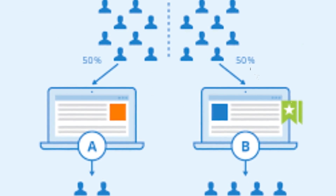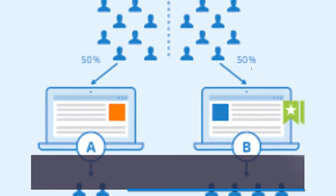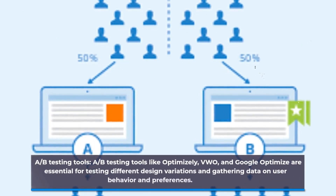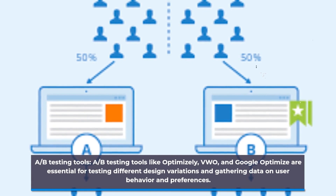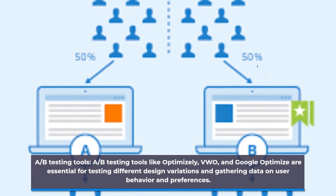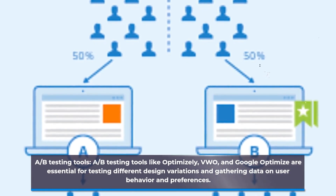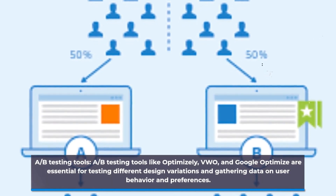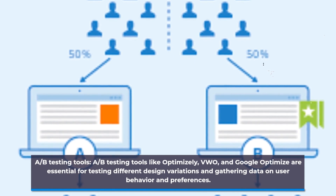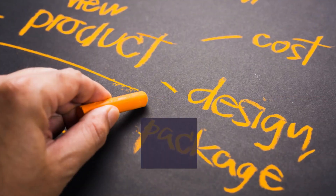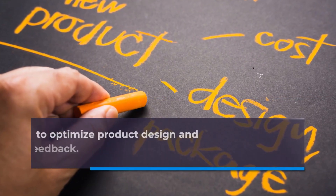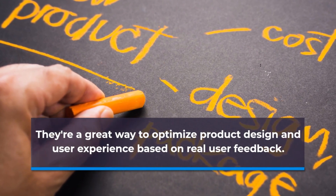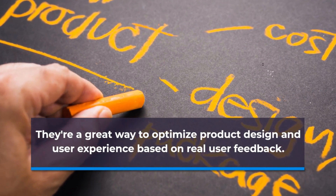A/B testing tools like Optimizely, VWO, and Google Optimize are essential for testing different design variations and gathering data on user behavior and preferences. They're a great way to optimize product design and user experience based on real user feedback.